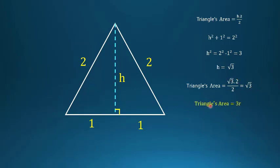From the previous part we proved the triangle's area is 3r, where r is the inradius. Setting these two equal: 3r = √3. Dividing both sides by 3 gives r = √3/3.